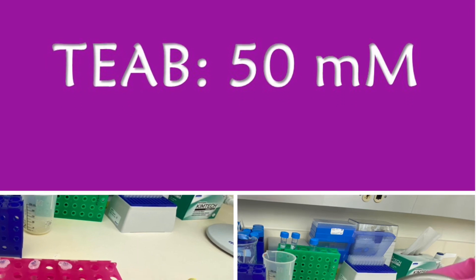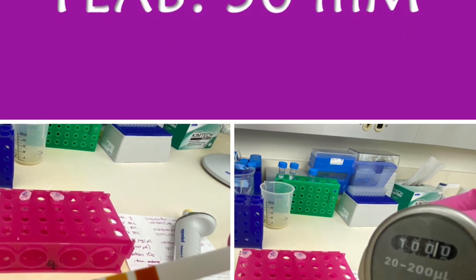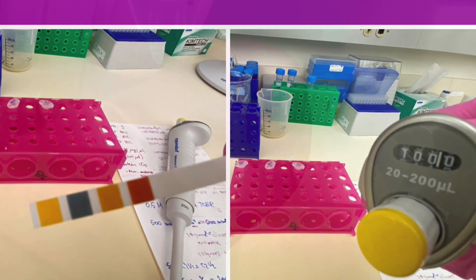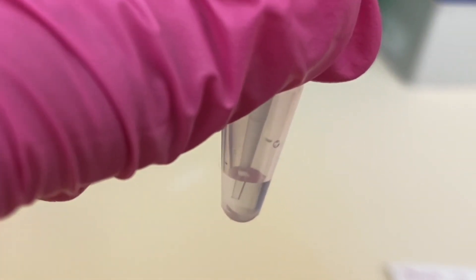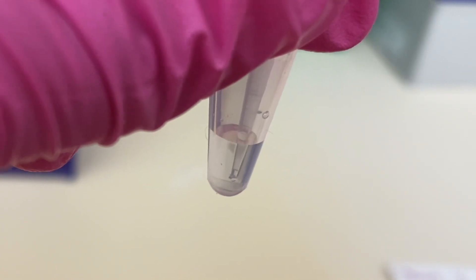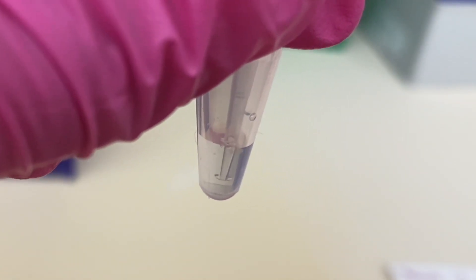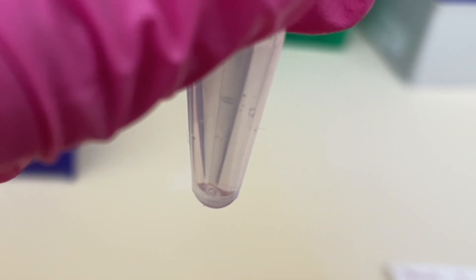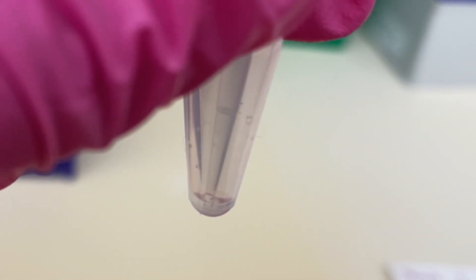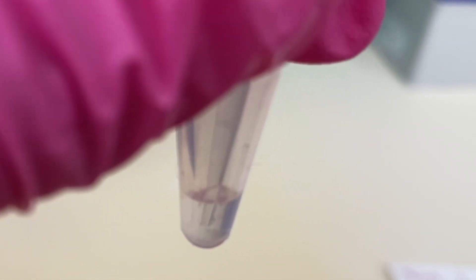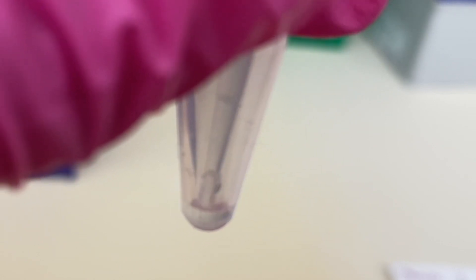Next, I will have to dissolve the protein pellet in 50 millimolar TEAB. So I will be adding 100 microliters of the buffer to my pellet. And then you can either vortex—what I like to do is just go up and down gently with the pipette—and the protein should dissolve. If they don't, don't worry. When we add trypsin in the next step and leave it on a thermomixer overnight, everything should be dissolved, so don't worry about that.